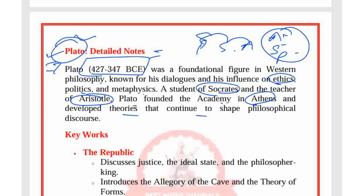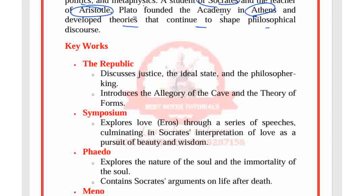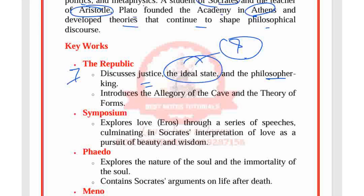Key works by Plato: The Republic discusses justice and the ideal state, and introduces the philosopher king. It also introduces the allegory of the cave and the theory of forms. The Symposium explores love — eros — through a series of speeches, culminating in Socrates' interpretation of love as the pursuit of beauty and wisdom.